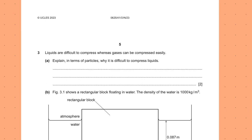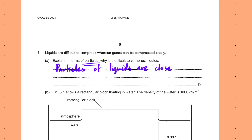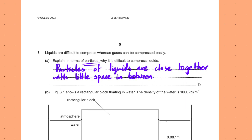How density changes, how hot water rises and cold water falls — that's convection. Look out for the phrases 'throughout the water' or 'how it heats up all the water' as indicators. Liquids are difficult to compress whereas gases can be compressed easily. Explain in terms of particles why it is difficult to compress liquids. Particles of liquids are very close together with little space in between, so strong intermolecular forces prevent compression.